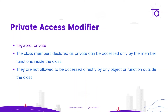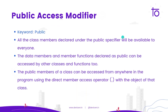Private members are not allowed to be accessed directly by any object or function outside of the class. The public access modifier uses the keyword public.